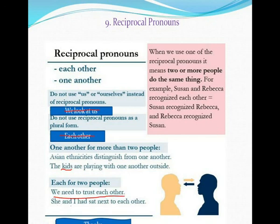Another example: 'She and I had sat next to each other.' Here one person is she and the other is I, just two people sitting next to each other. Hope you understand it better. Read it and listen again and again. Thank you, and here our chapter on pronouns ends.